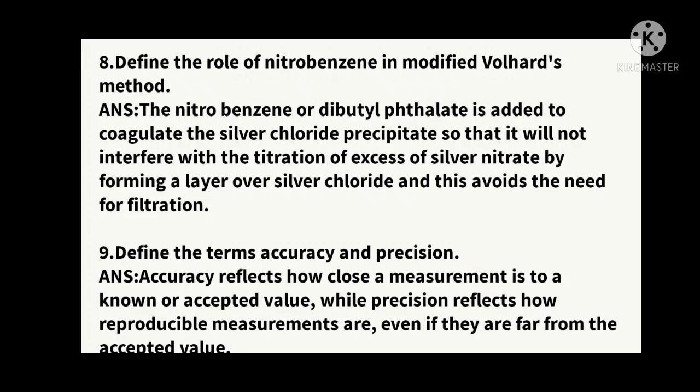Eighth question: define the role of nitrobenzene in the modified Volhard's method. Nitrobenzene, or dibutyl phthalate, is added to coagulate the silver chloride precipitate so that it will not interfere with the titration of excess silver nitrate. It forms a layer over the silver chloride precipitate, and this avoids the need for filtration.